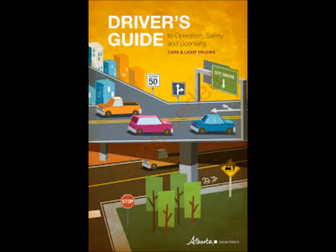Exiting the GDL Program is not mandatory. However, if you do exit from GDL, you will move from a Class 5 GDL to a full Class 5 Driver's License, qualify to reclass to a Class 1, 2, 3, or 4 Driver's License, increase the number of demerits allowed, remove the Zero Alcohol Tolerance Condition, and be able to be an accompanying driver to a learner. To exit the GDL Program, you must be in the Probationary Stage for a minimum of 2 years, be suspension-free for the last 12 months of the 2-year Probationary Stage, and pass the Advanced Road Test.